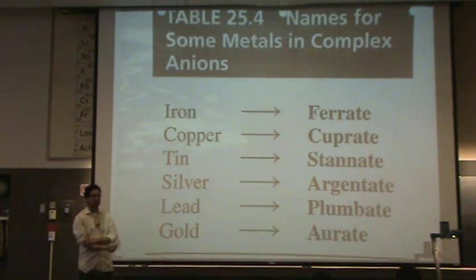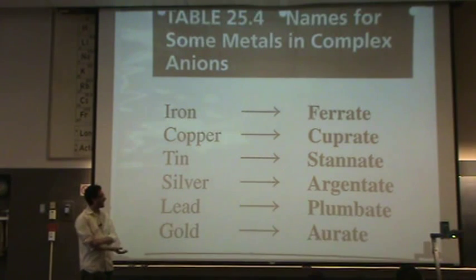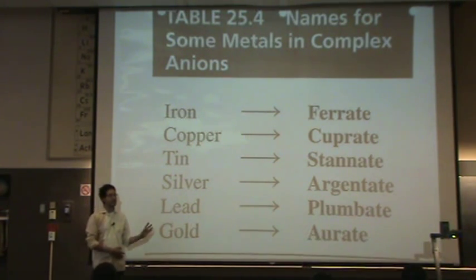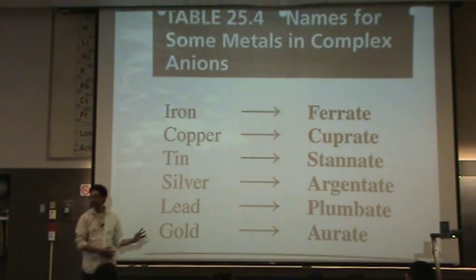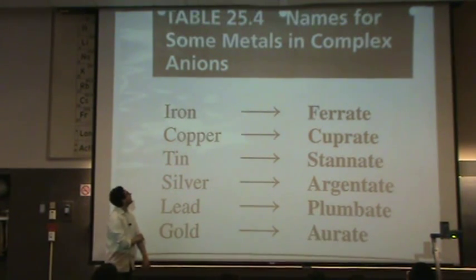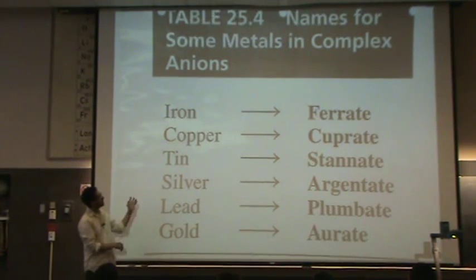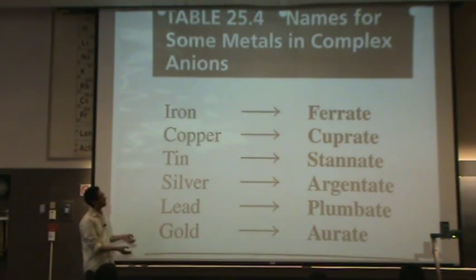When you took General Chem 2A, you had the option to use Latin or English. Here, you do not have the option, so you must learn these. Iron — its symbol is Fe, which comes from ferris or fair.